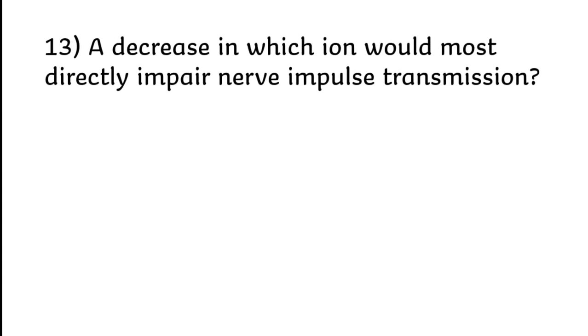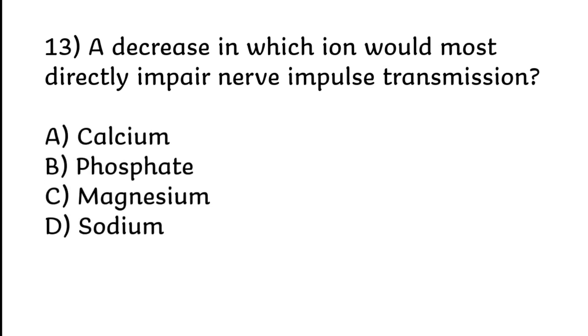A decrease in which ion will most directly impair nerve impulse transmission? Calcium, phosphate, magnesium, or sodium. Correct answer is option D, sodium.